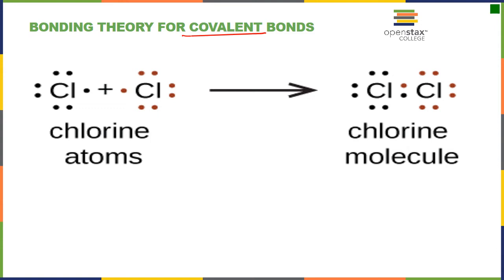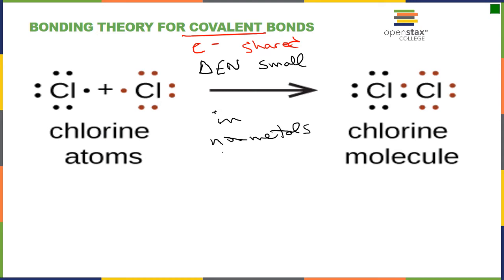Now let's look at covalent bonding. With covalent bonding, electrons are going to be shared. Covalent bonding occurs when the difference in electronegativity, our delta EN, is small to medium. This occurs in nonmetals. When nonmetals bond with nonmetals, we have smaller differences in electronegativity and electrons are going to be shared.